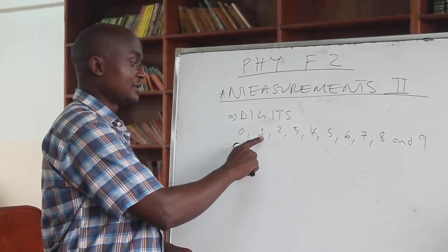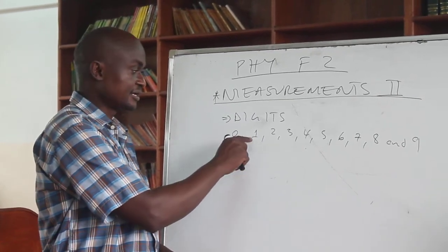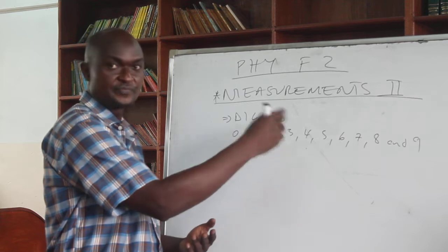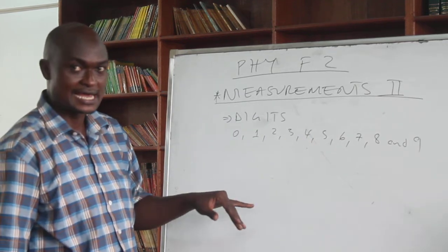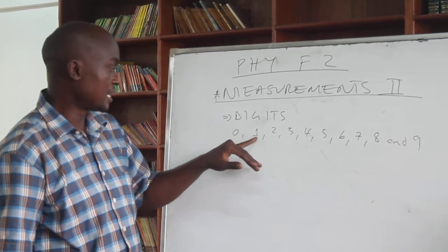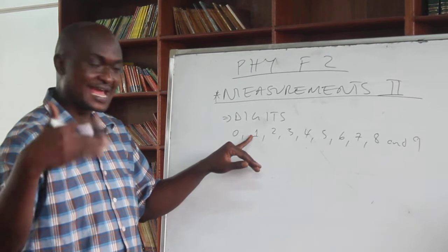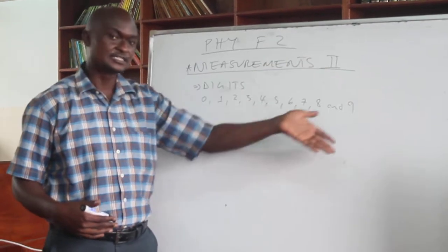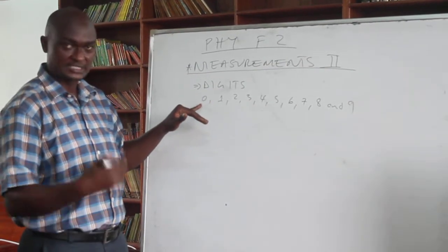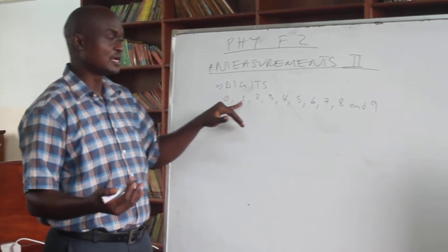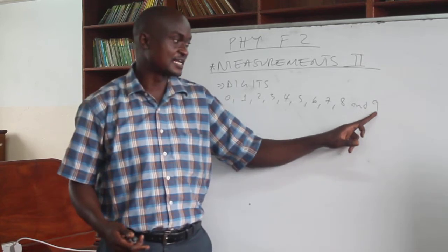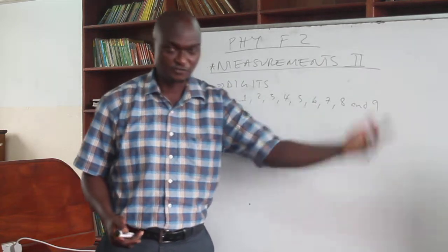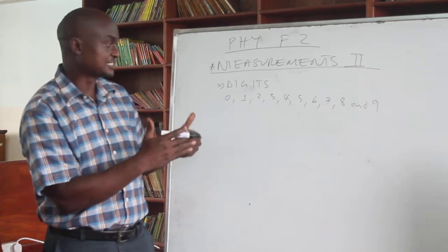We talk about number ten, which is one and zero — those are two digits. Number eleven is one, one — two digits. Twelve is one and two, thirteen is one and three, and so forth. If you go to three digits: a hundred is one, zero, zero. A hundred and one is one, zero, one — all the way up to nine hundred and ninety-nine, which is nine, nine, nine — those are three digits. Then we start the four-digit numbers: a thousand is one, zero, zero, zero. A thousand and one is one, zero, zero, one — all the way up to nine thousand, nine hundred and ninety-nine. So this is the basis of digits. When you measure quantities in physics, they will be expressed numerically using these digits, and then computed accordingly.